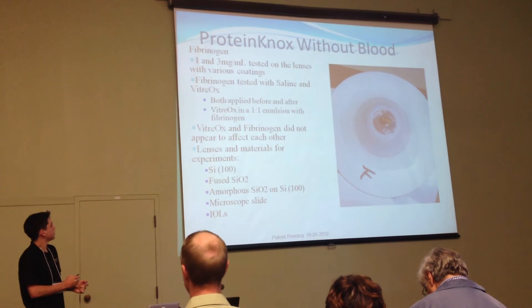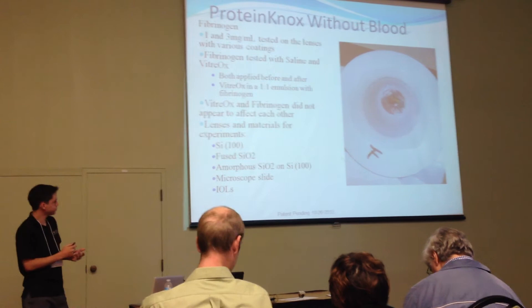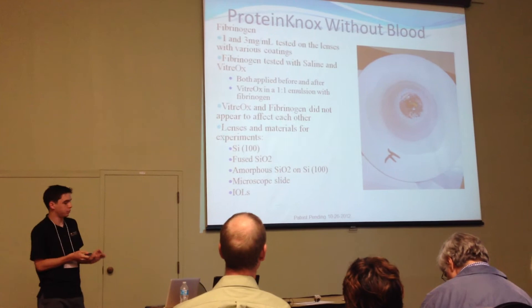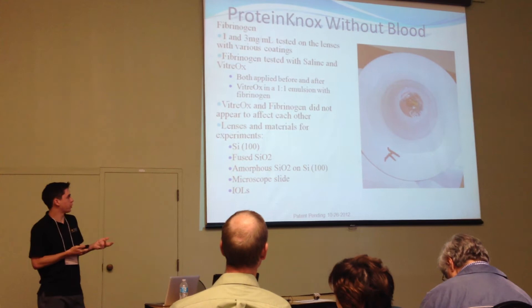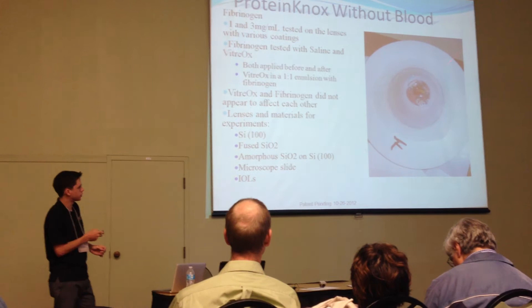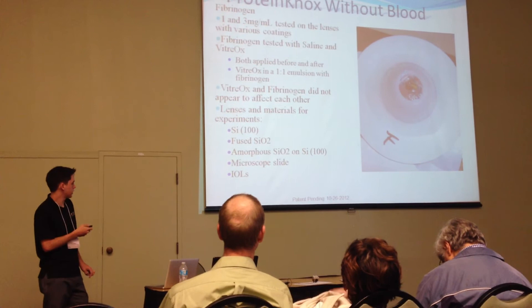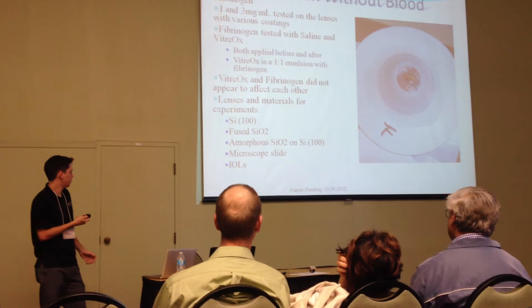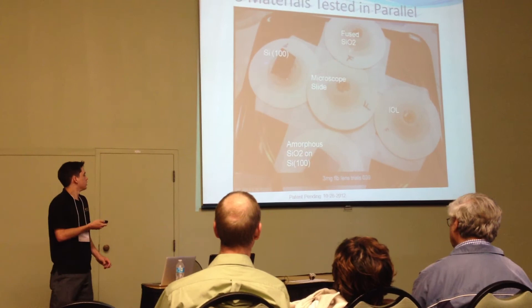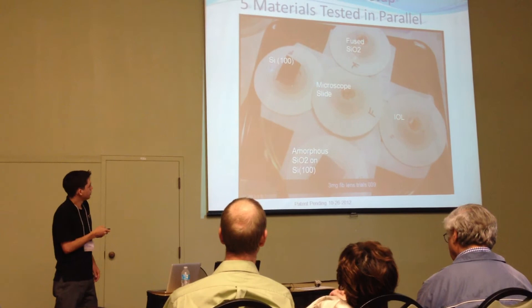Once we had applied our fibrinogen, we used the saline Vitriox again and mimicked as many different tests as we could, applying before and after. We tested this on five different materials: SI-100, fused silicon dioxide, amorphous silicon dioxide placed onto silicon, microscope slide, and the actual eyewells themselves. We tested all five at once to minimize variables. Results showed no fogging on our IOLs.